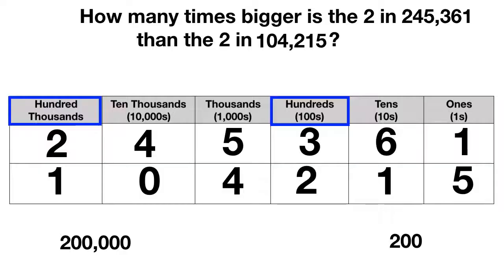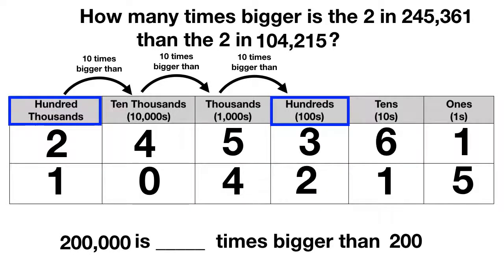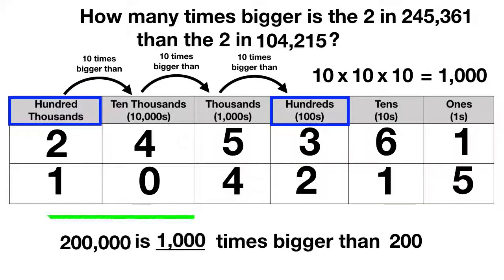So we're really trying to figure out: 200,000 is how many times bigger than 200? This is challenging because 100,000s are very far away from hundreds on the place value chart. 100,000s are 10 times bigger than 10,000s, 10,000s are 10 times bigger than thousands, and thousands are 10 times bigger than hundreds. To get from 100,000 to 100, you move three place values over, so you get 10 times bigger three times. 10 times 10 times 10 equals 1,000 — so when you move three place values over, you get 1,000 times bigger.